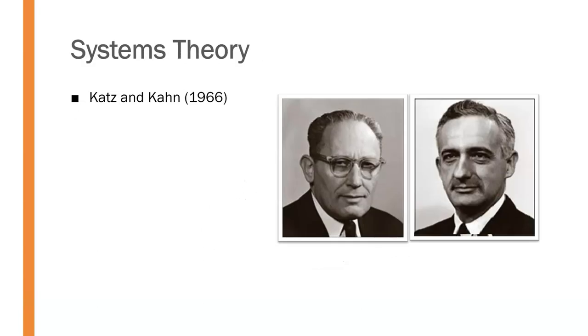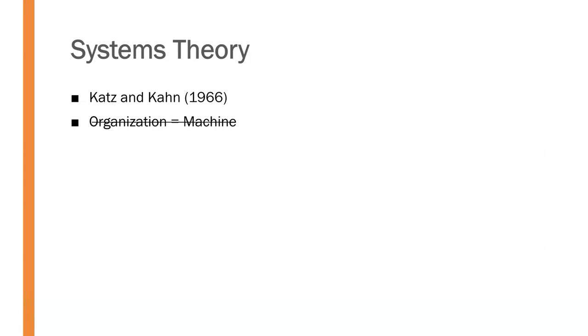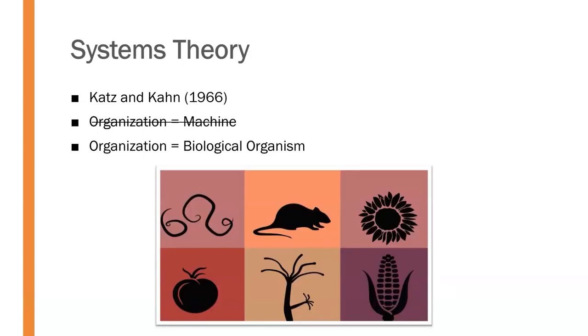In 1966, general systems theory was expanded to the study of organizations by Daniel Katz and Robert Kahn, who called this approach systems theory. Up to that point in time, organizations were seen as a machine. Katz and Kahn suggested that this view did not accurately capture the dynamics of an organization. They felt that organizations, much like living organisms, are open systems that interact with their environment in order to acquire the resources needed to grow and survive.